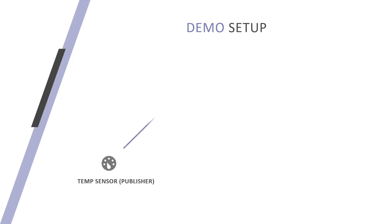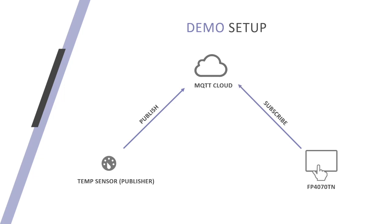The demonstration in this video will include a setup similar to the example described earlier. I will be using a DHT11 temperature sensor commonly available in the market. This sensor is set up to publish to the MQTT broker directly. I will be using an FP4070TN device that can communicate over TCP/IP to the cloud broker. The topic for this communication will be room temp. Be aware that the topic field is case sensitive — any change in casing will create a new topic altogether.